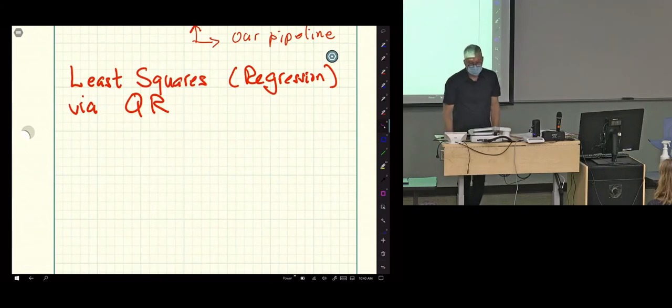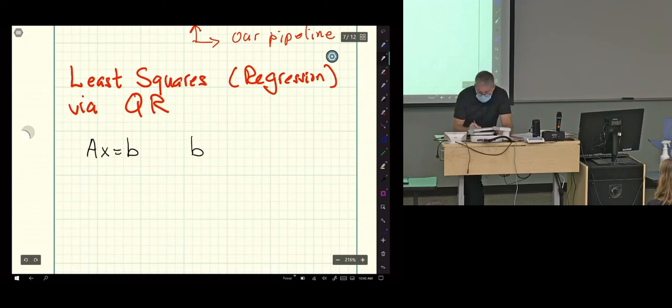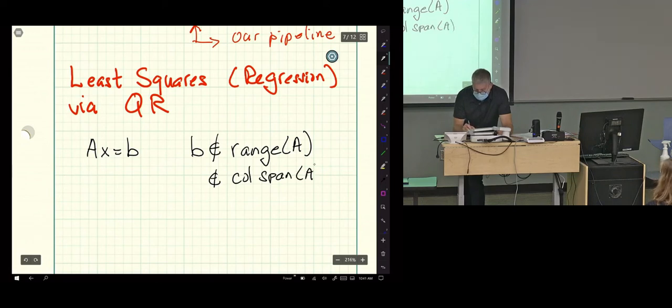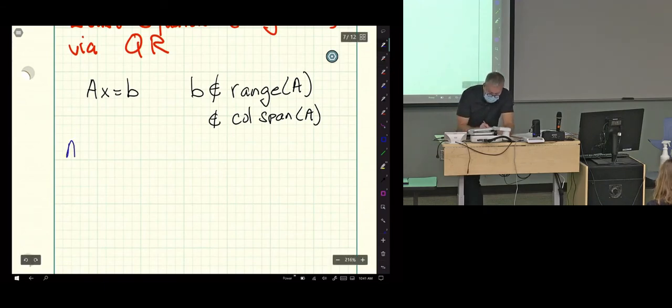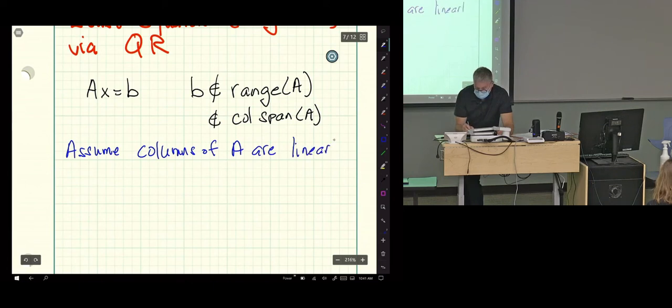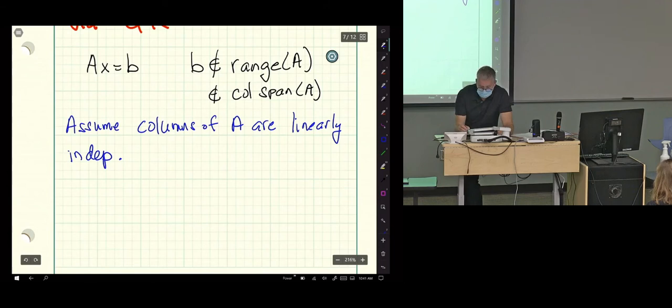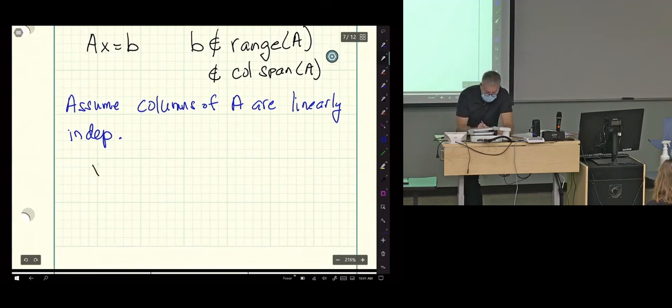So least squares, let's remember what that's all about. That's solving AX equals B. B is not an element of the range of A, not an element of the column span of A. But we do assume the columns of A are linearly independent.